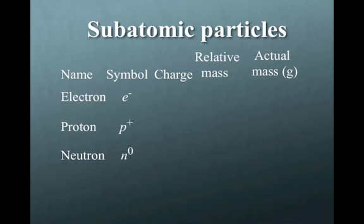And the neutron, we have an N with a zero at the top, the zero indicating that there is no charge. Now, we know that the electron has a negative one charge, the proton has a positive one charge, and the neutron is neutral.